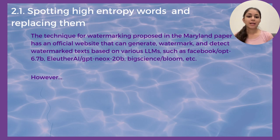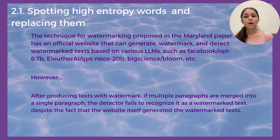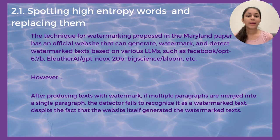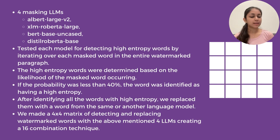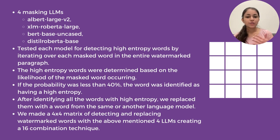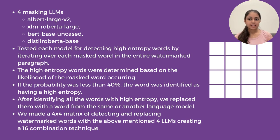The watermarking technique proposed claims it can generate and detect watermarked text based on the given LLMs. However, when we experimented with it, we found that after producing watermarked text, if we merge multiple paragraphs into a single paragraph, the detector fails to recognize it as watermarked text. The paper proposes that high entropy words are typically the watermarked tokens. We used four masking LLMs and iterated masking each word over the entire watermarked paragraph. High entropy words were determined based on the likelihood of the masked word occurring, with a threshold of 40% — if the probability was less than 40%, that word was identified as high entropy.